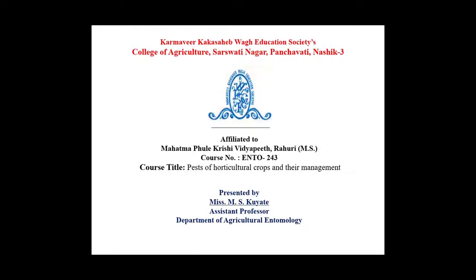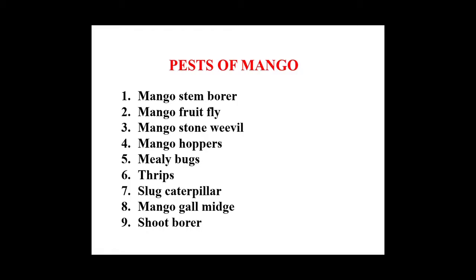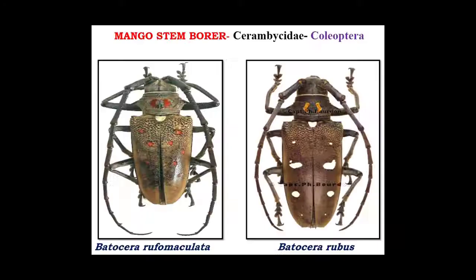In this lecture we are going to learn about the pests of mango. These are the different pests of mango: first is mango stem borer, second is mango fruit fly, then mango stone weevil, mango hoppers, mealybugs of mango, thrips of mango, slug caterpillar, mango gall midge, and last one is shoot borer of mango.